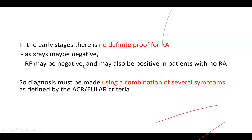In the early stages, there is no definitive proof for rheumatoid arthritis. X-rays may be negative, the rheumatoid factor may be negative, and it can also be positive in patients without RA. So the diagnosis must be made using a combination of several symptoms, as defined by the American College of Rheumatologists or the European League Against Rheumatism.